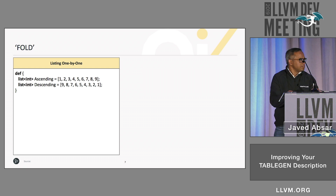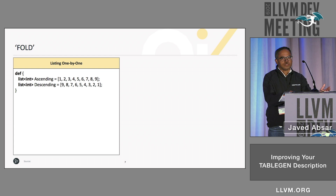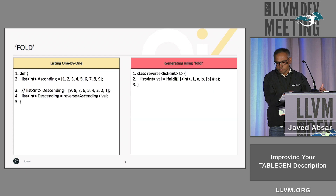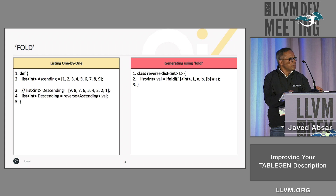Next, suppose you have a list and you want to reverse it. Of course, you can just rewrite the list, but what you typically want is to call a function to reverse it. In TableGen, there is nothing like functions, but you can use the following idiom: write a class called reverse, pass it a list as a template argument, and then use the fold function. The first argument to fold is a seed — in this case, an empty list. The second argument is the list itself. Fold works over every element of the list, labeled B in this context, and the last argument is the function to apply. Because you want to reverse the list, you prepend B to the partial list A.